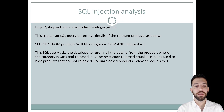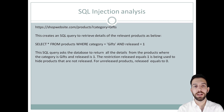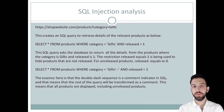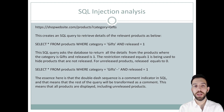The site doesn't implement any defenses against SQL Injection attacks, so the attacker can construct an attack like this. The double-dash sequence is a comment indicator in SQL, meaning the rest of the query will be transformed into a comment. This means all products will be displayed, including the unreleased products.